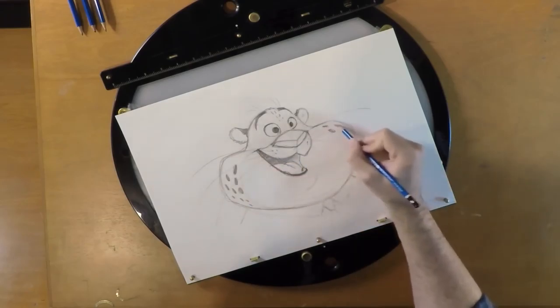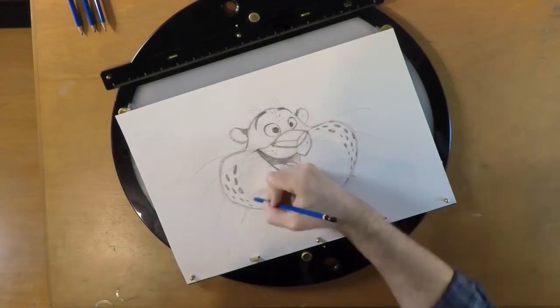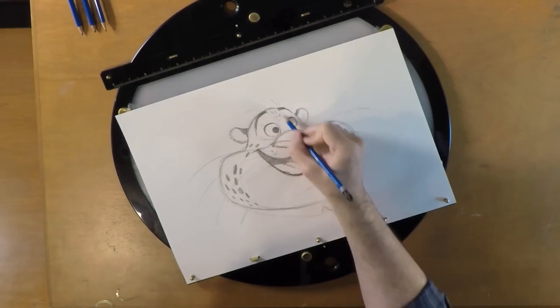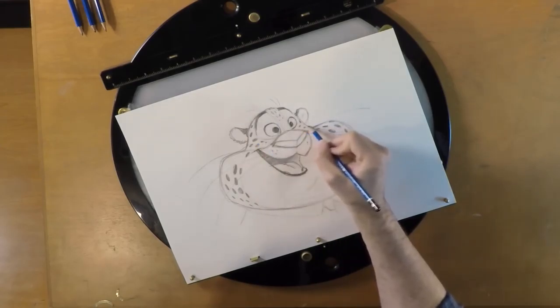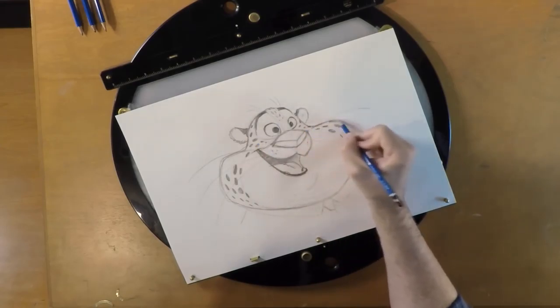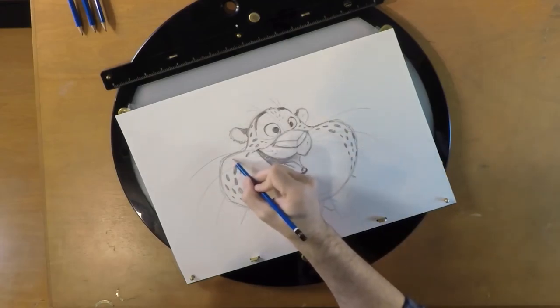Around his eyes is also a no spot zone. That little road we drew around his eyes, no spots going there. And then the most noticeable spot on Klawhauser is right here on his cheek.